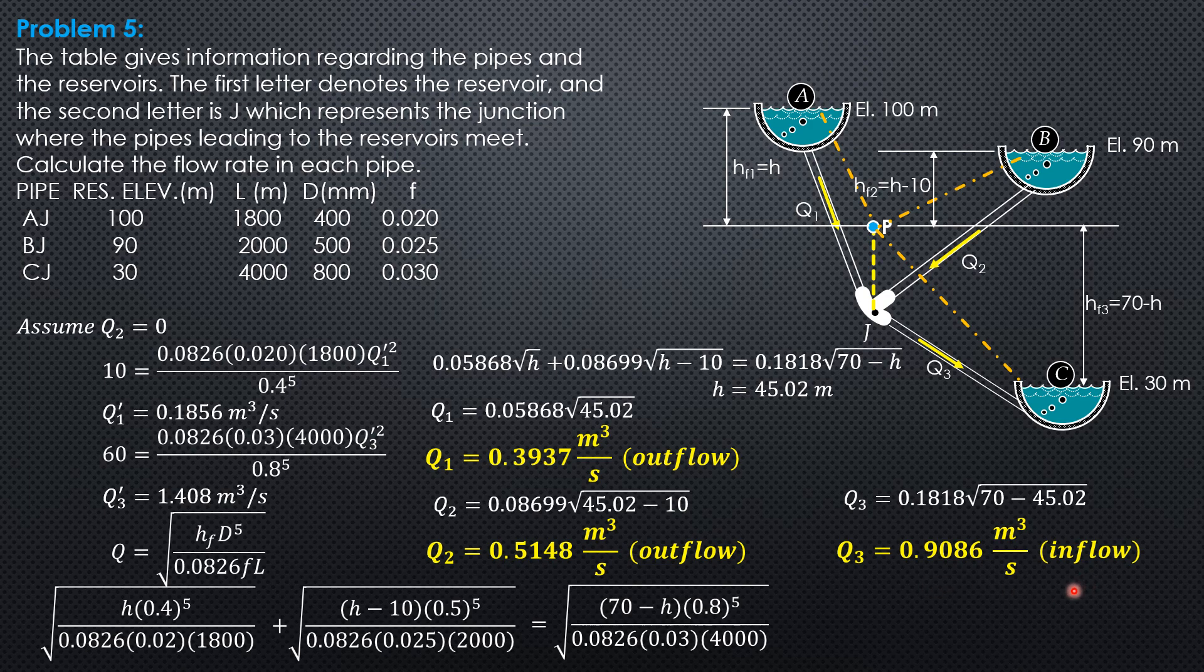So to check, Q1 plus Q2 must be more or less equal to Q3. More or less because, remember, we round off values, so there's a very small difference, but they are practically the same. That's it.